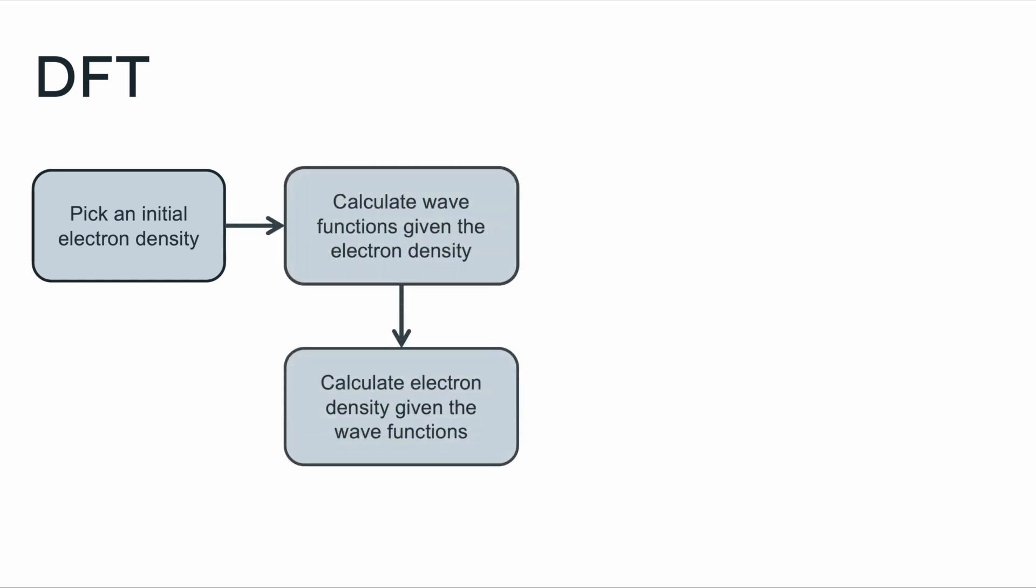First, we pick an initial electron density. Then we calculate the wave functions given the electron density. Then we calculate the electron density given the wave functions. We then check to see if the electron density changed from the last iteration. If it did, we compute the electron density once again. If not, we're done.